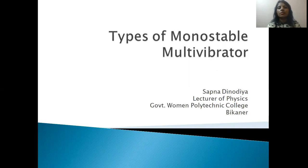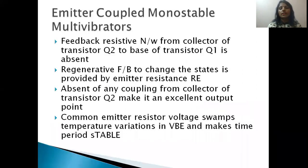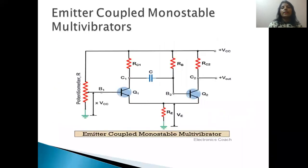Therefore, in this lecture, we will see how the emitter coupled Monostable Multivibrator is built. This is shown in a diagram. In this diagram, there are two transistors Q1 and Q2.